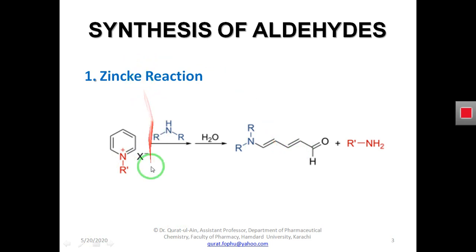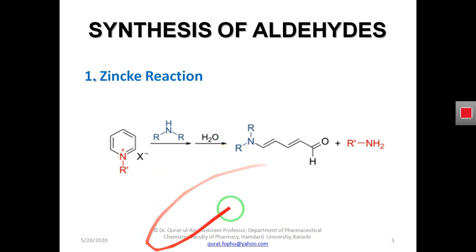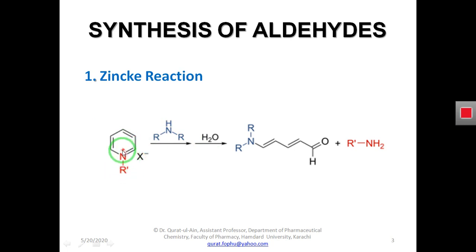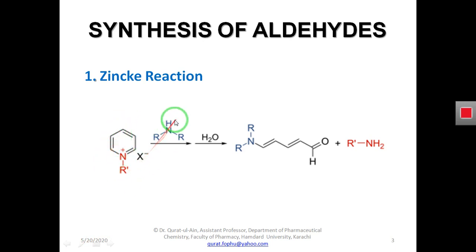So, to produce an aldehyde from the zinc reaction, you take pyridine, react it with a secondary amine in the presence of water, and you get an aldehyde. That is all you need to remember for this method.